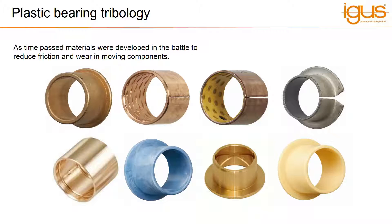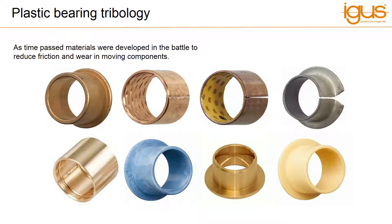The industrial revolution brought on many advances in productivity: steam, mass production, automation, to name but a few. With this came the requirement to increase machine reliability, something engineers are continuously striving towards. Traditionally, steel lubricated plain bearings were introduced as a standard in plain bearing technology — tough, cheap and easy to maintain, whether brass, phosphor bronze, white metal or even cast iron.